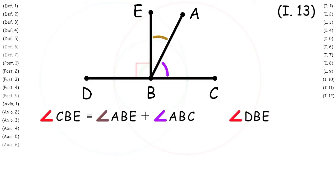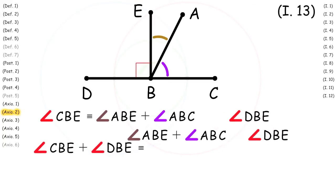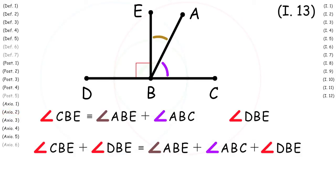With the right angle DBE we apply Proposition 2 to show that angle CBE plus angle DBE is congruent to angle ABE plus angle ABC plus angle DBE.